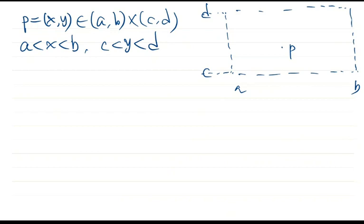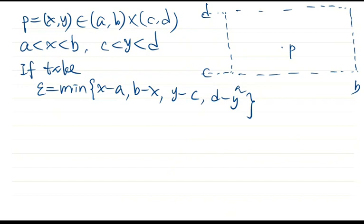It is very easy to see that if we take epsilon to be the minimum of x minus a, b minus x, y minus c, and d minus y, if epsilon is taken by this way, then epsilon is positive.